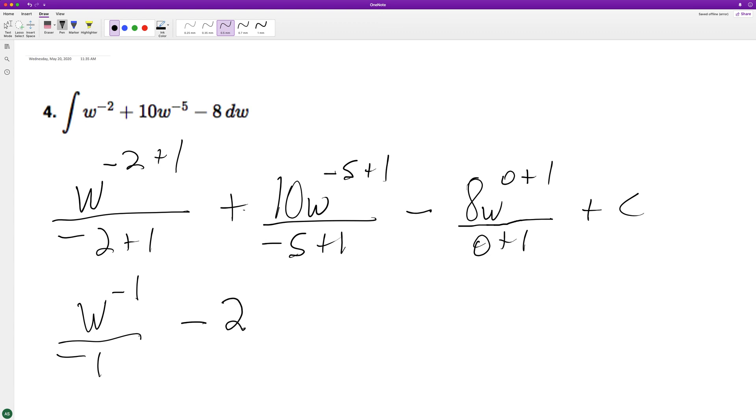So we end up with w to the negative 1 over negative 1, minus 5 over 3 w raised to negative 4, minus 8w plus C.